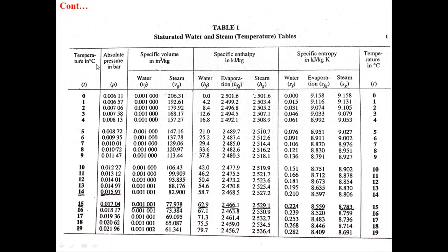This is Table 1 — saturated water and steam temperature-based table. The first column is temperature in degree Celsius. The second column is absolute pressure in bar, which is the saturation pressure corresponding to the given temperature. The third column is specific volume in meter cube per kg, containing two parts: VF (saturated liquid specific volume) and VG (saturated vapor specific volume).